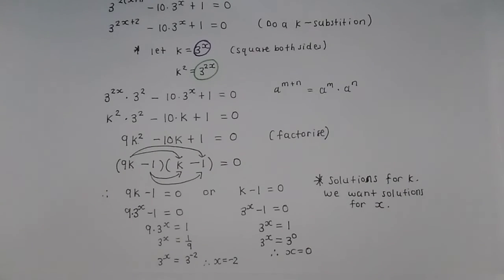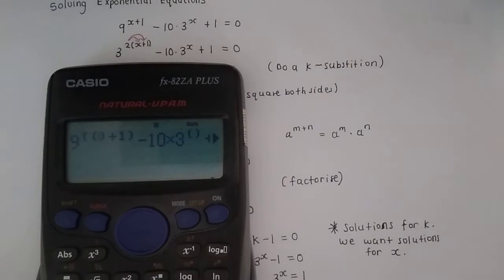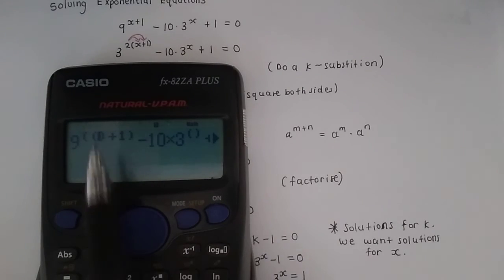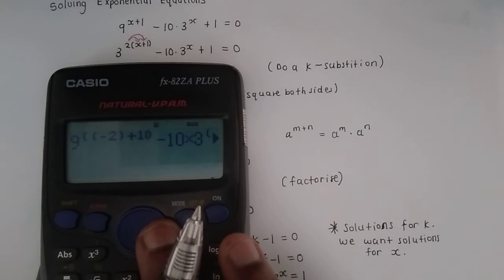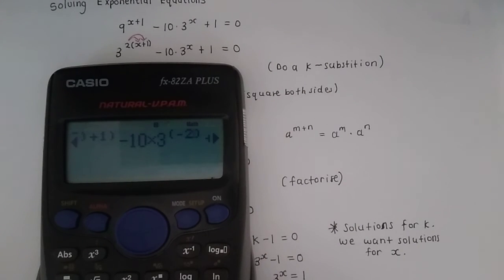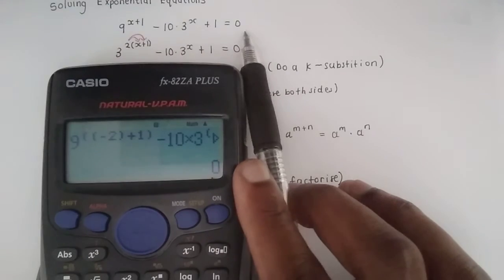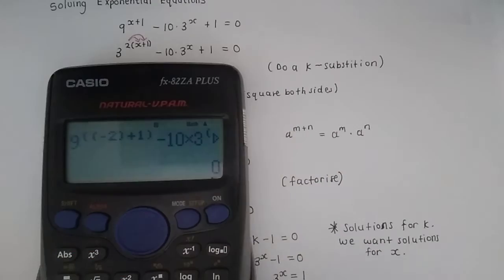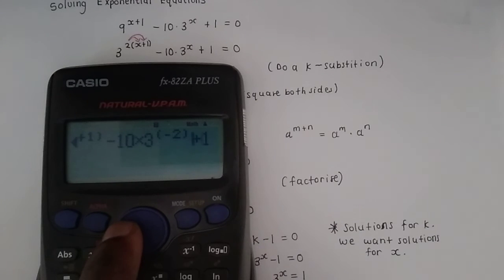Now we need to check. So I have our original equation typed into the calculator. So now in the place of these input brackets, we need to check our two solutions. The first solution we had was negative 2. So we need to go everywhere where there is x and substitute negative 2. Press equal. Cool. We get a 0. That is the right-hand side of this equation. So we are happy.